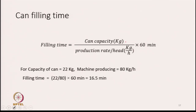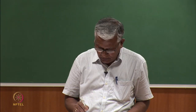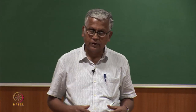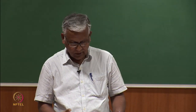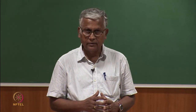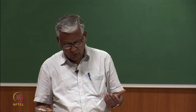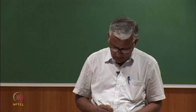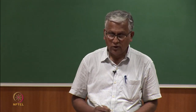Can filling time depends on can capacity and production rate per head. Filling time (minutes) = (can capacity in kg / production rate per head in kg per hour) × 60. For example, if can capacity is 22 kg and the machine produces 80 kg/hour, filling time = (22/80) × 60 = 16.5 minutes. So roughly every 16.5 minutes a can is filled and must be replaced, leading to about 4 replacements per hour per head.